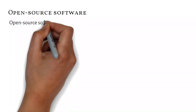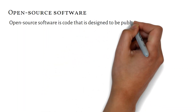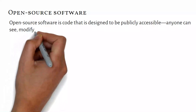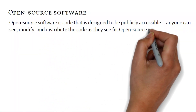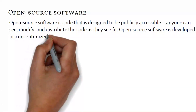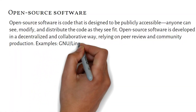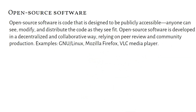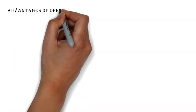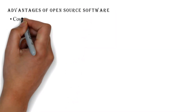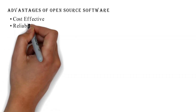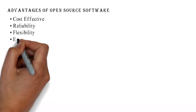Open source software is code that is designed to be publicly accessible. Anyone can see, modify, and distribute the code as they see fit. Open source software is developed in a decentralized and collaborative way, relying on peer review and community production. Examples include Linux, Mozilla Firefox, and VLC media player. Advantages of open source software include being cost-effective, reliability, flexibility, and error-free.